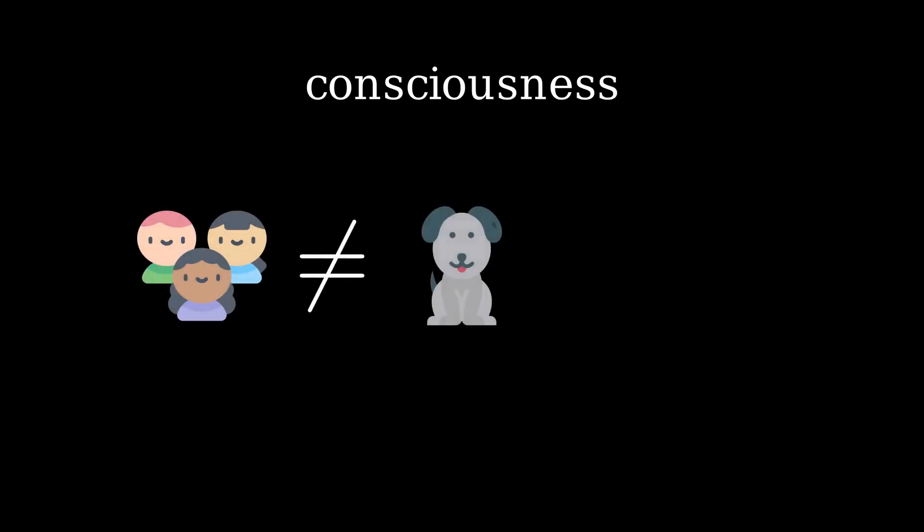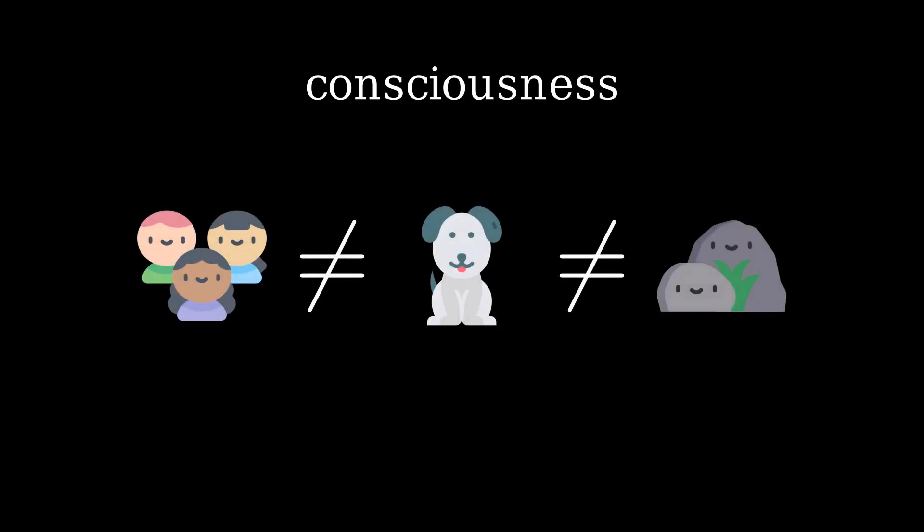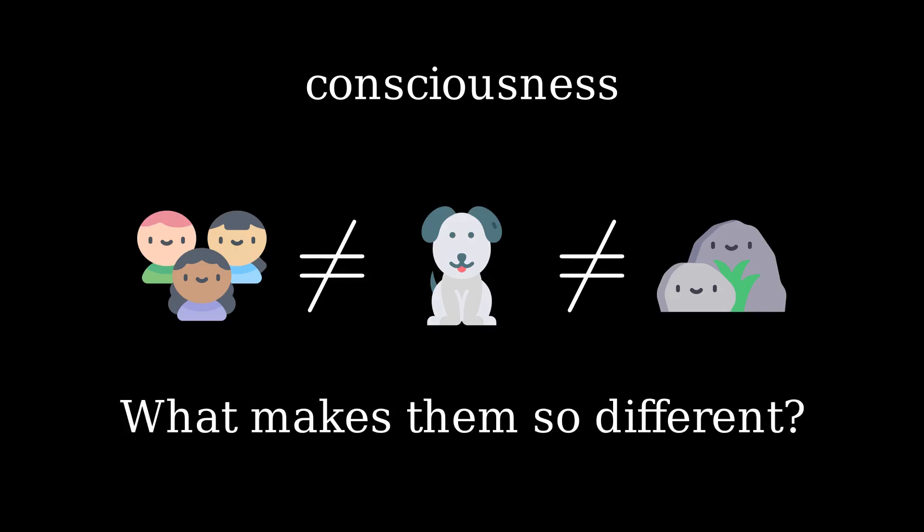Let me ask you a question. We intuitively understand that when it comes to consciousness, humans are different than dogs and that both are different than rocks. We also know that in the case of humans, consciousness has something to do with our brains, and we can probably say the same about dogs. Now the question is, if humans, dogs and rocks are made from the same stuff, namely matter, then what exactly is it that makes them so different in relation to consciousness?